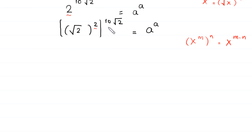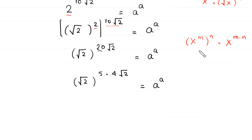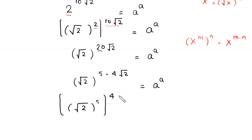We multiply this power 2 by this power 10 times root 2. So, this will become (√2) to the power 2 times 10, which is 20 times root 2, equal to a to the power a. Next, we write this root 2 to the power — this 20 is the same as 5 times 4 — times root 2, equal to a to the power a.